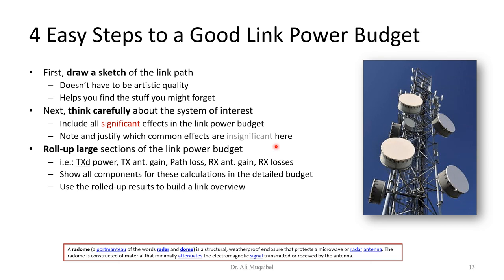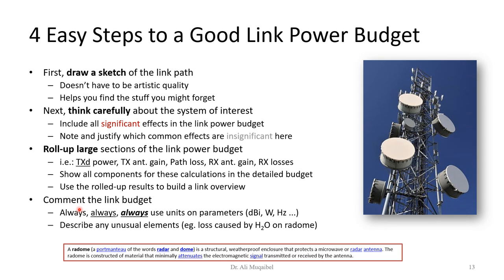If there's anything not significant, we need to make sure we note and justify anything we ignore. Roll up large sections — for example, collect everything on the transmitter side, everything in the channel, everything in the path loss, and everything at the receiver side. That will make things more organized. Use roll-up results to build a link review. Always, always, always use units of parameters in dBW.